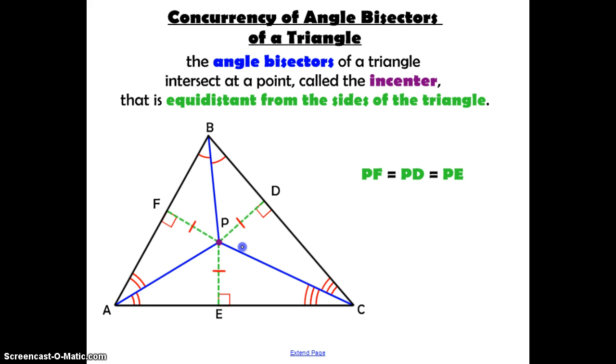A special property of the incenter is that it's equidistant from the sides of the triangle. So segment PD, and again, when we're talking about the distance from point P to the side BC, we have to bring in our definition of the distance from a point to a line as the perpendicular segment. So this segment PD is congruent to segment PF, congruent to segment PE. All of those lengths would be equal.